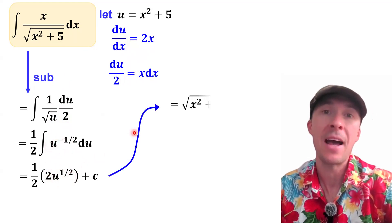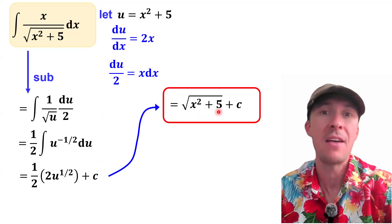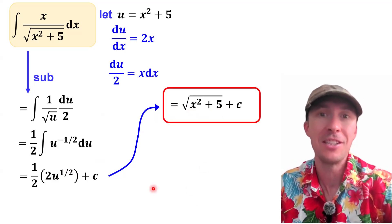And yeah, we'll sub back. u is x squared plus 5 and we're done. That's our integral. Cheers.